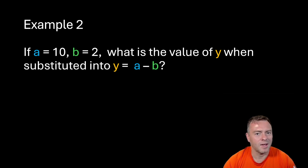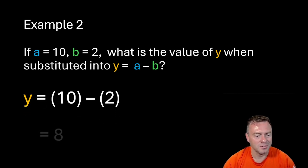So in this case here we've got a is equal to 10, b is equal to 2. What's the value of y when it's substituting y is equal to a minus b? So we've got 10 minus 2. So that would be the same as 10 take away 2 which is equal to 8.